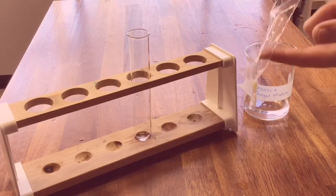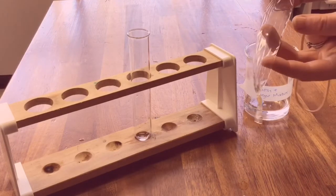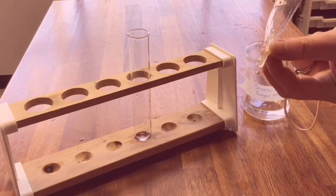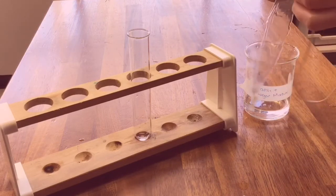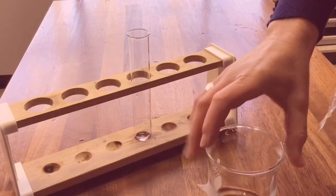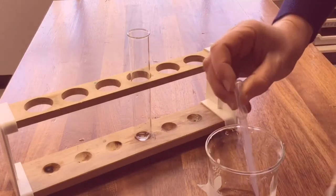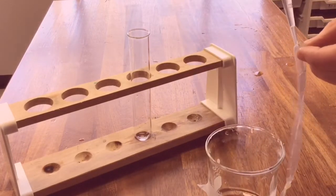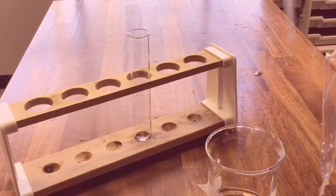To do this we use visking tubing which will act like the small intestine wall. We tie a knot on one end of the visking tubing and then we fill it up with a mixture of starch and sugar. Starch is a large molecule and sugar is a very small molecule.